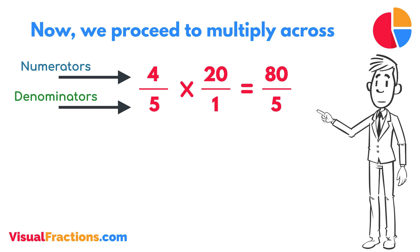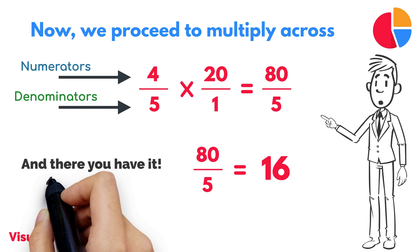We now have a new fraction, 80 fifths. To find the final answer, divide the numerator by the denominator. So, 80 divided by 5 equals 16. And there you have it, 4 fifths of 20 is 16.